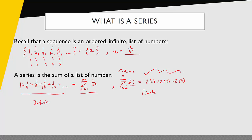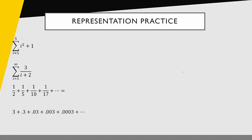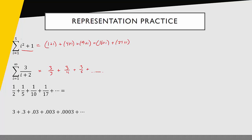One of the first skills we need to develop when working with series is to go back and forth easily from sigma notation to expanded form. Let's look at a couple of problems. The first two go from sigma notation to expanded form — that part is relatively straightforward. I evaluate the argument at the different i values. When i equals 1, I get 1 squared plus 1, then 2 squared plus 1, 3 squared plus 1, 4 squared plus 1, and 5 squared plus 1. For the next one, when i equals 1 I have 3 over 3, then 3 over 4, 3 over 5, and so on — it's an infinite series.